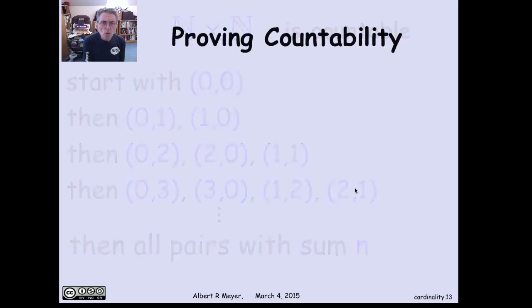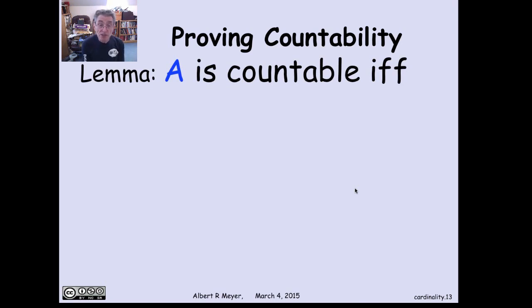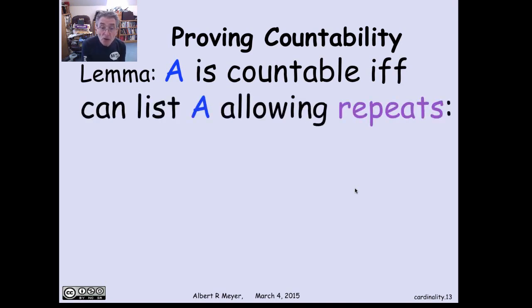Now, when you're trying to prove countability, it's very useful to have the following lemma, which gives an alternative characterization of countability. Namely, a set A is countable if and only if you can list A allowing repeats. Remember, our original definition is that you can list A without repeats if it's infinite or else it's finite.